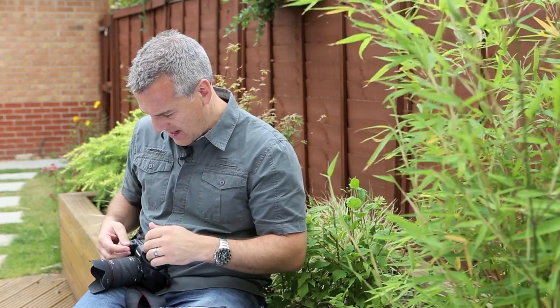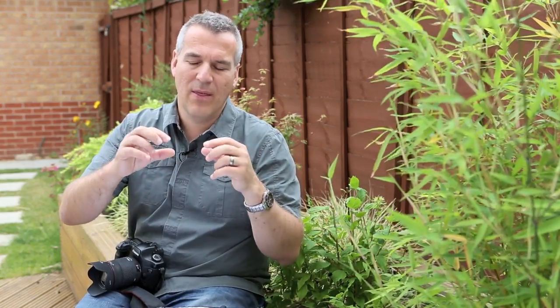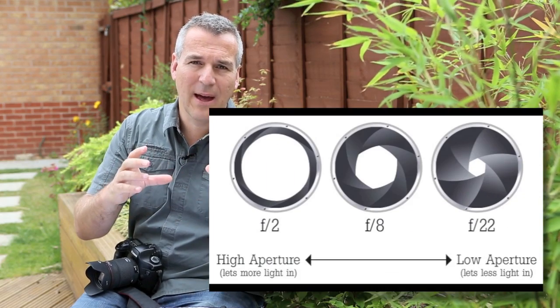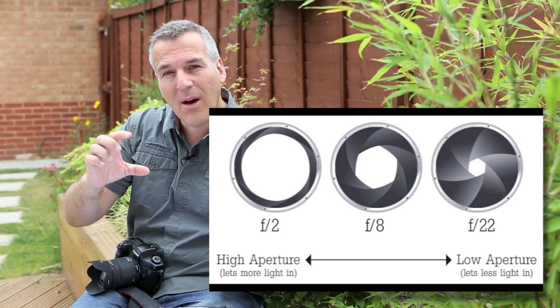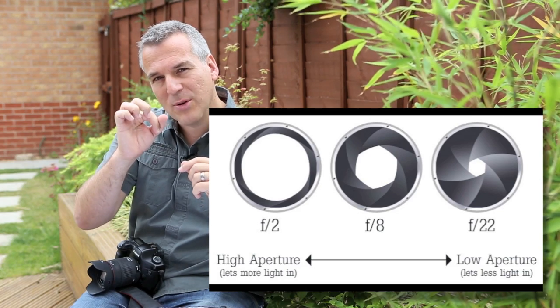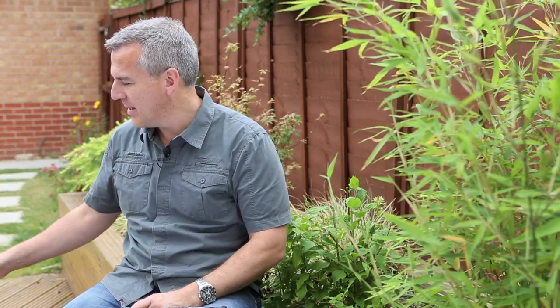Aperture on a camera is measured in f-stops. You will see on the display on the top that it will give you a value — usually a decimal point, as opposed to the shutter speed which we'll come to in the next video. This one at the minute is on 3.5, for instance. The lower that number gets, the wider the space is, which means more light is coming through. The higher that number is, I'm just tightening up that hole and making it smaller and smaller.